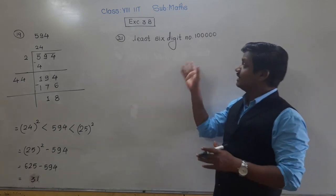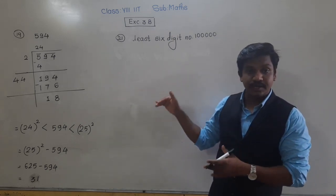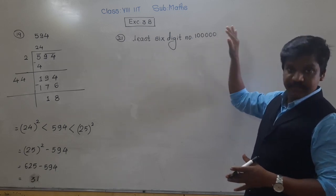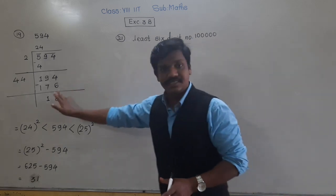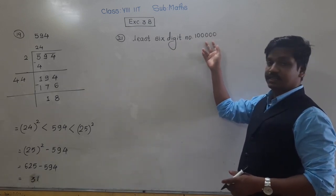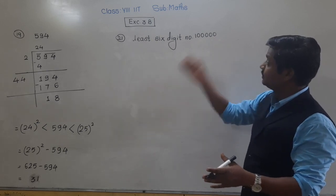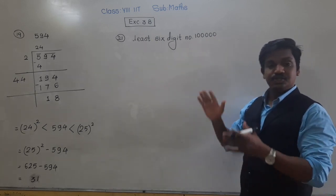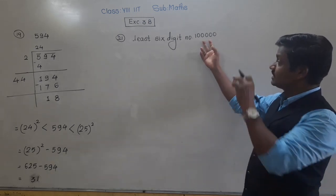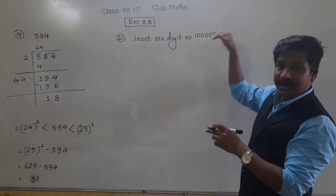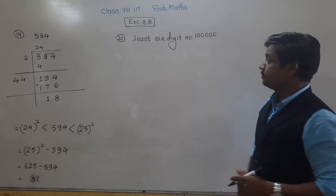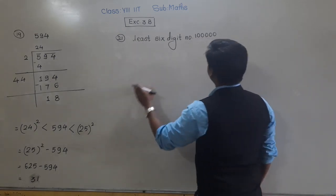To find the least six-digit perfect square number, we need to add the least number to 1 lakh — same method as before. We cannot subtract, because if we subtract anything to find the perfect square, that number will become a five-digit number, and we want the least six-digit number. So we need to add a number to 1 lakh to get the least six-digit perfect square.